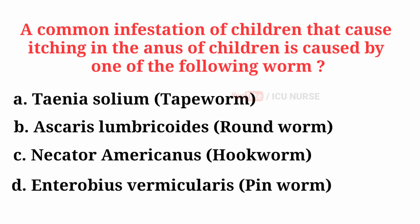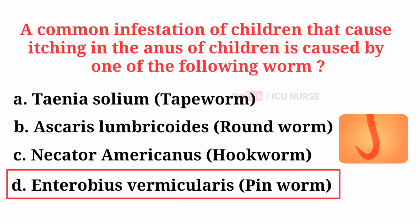A common infestation of children that causes itching in the anus is caused by which worm? The correct answer is D, Enterobius vermicularis — that is, pinworm.